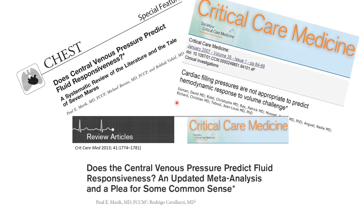There are multiple studies trying to answer the question whether central venous pressure predicts fluid responsiveness, and in fact those studies are showing that there is no good correlation between central venous pressure measurements and volume status of the patient. I'm going to explain why there is no correlation and why the central venous pressure is not a good indicator of volume status.